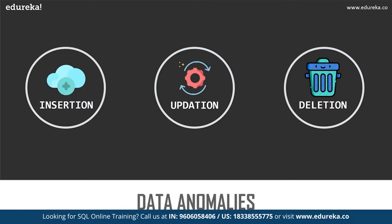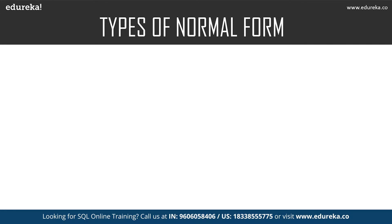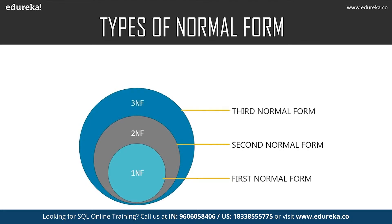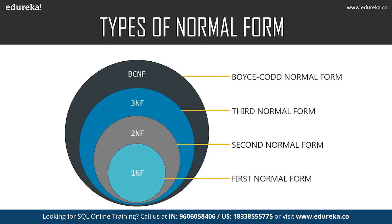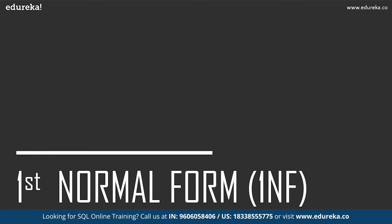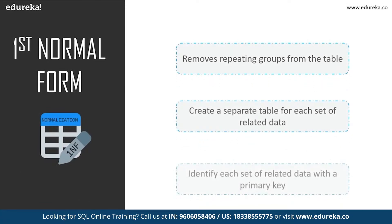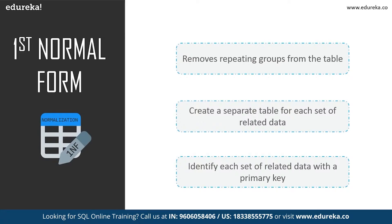So these were some of the problems that occurred while managing data. To eliminate all these anomalies, normalization came into existence. There are many normal forms still under development, but let's focus on the basic and essential ones. We will cover First Normal Form, Second Normal Form, Third Normal Form, and Boyce-Codd Normal Form. In First Normal Form, we tackle the problem of atomicity — atomicity means values in the table should not be further divided. In simple terms, a single cell cannot hold multiple values. If a table contains composite or multi-valued attributes, it violates the First Normal Form.